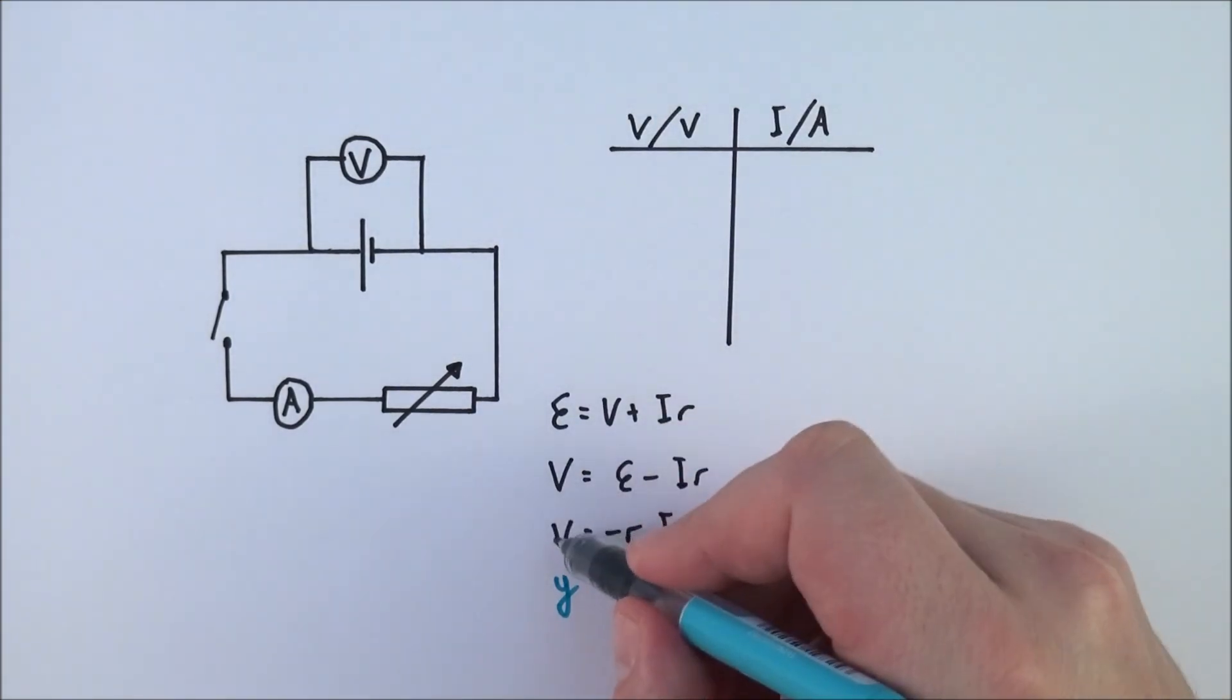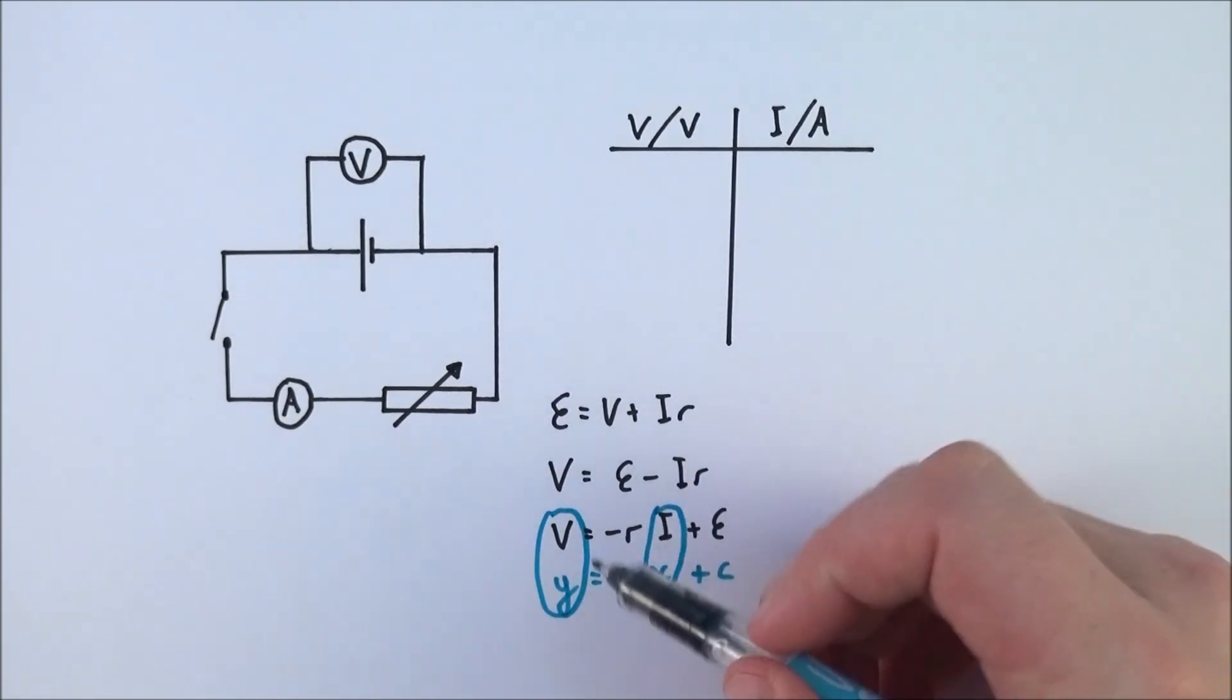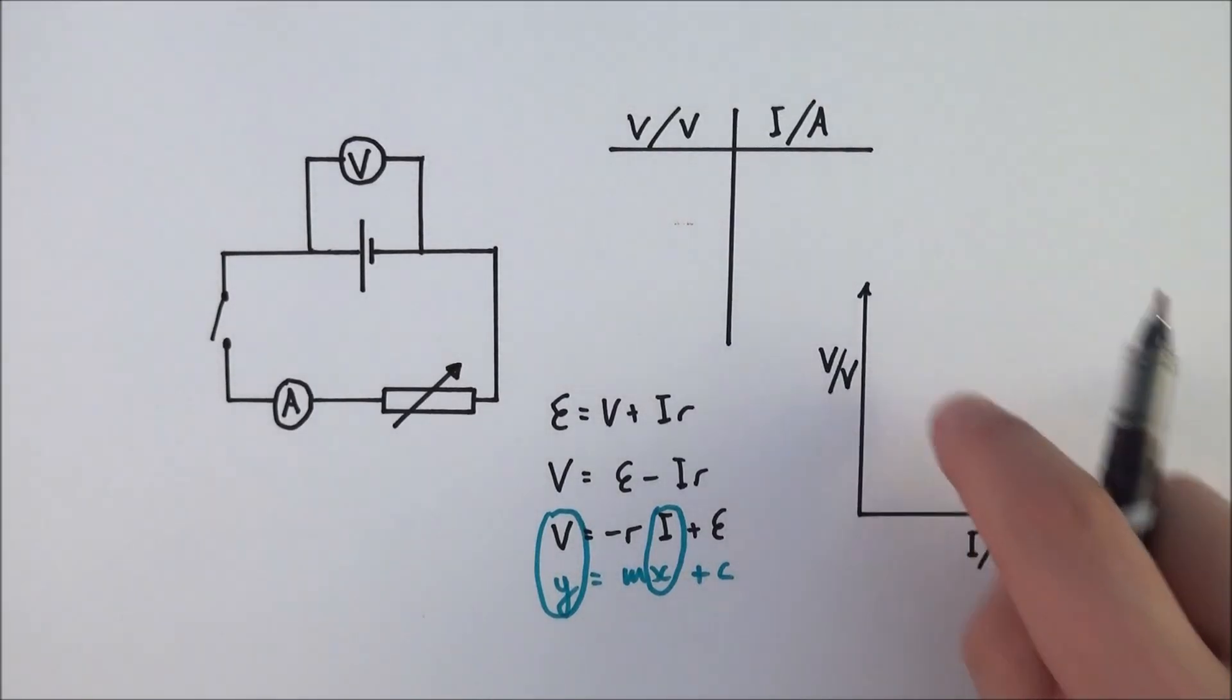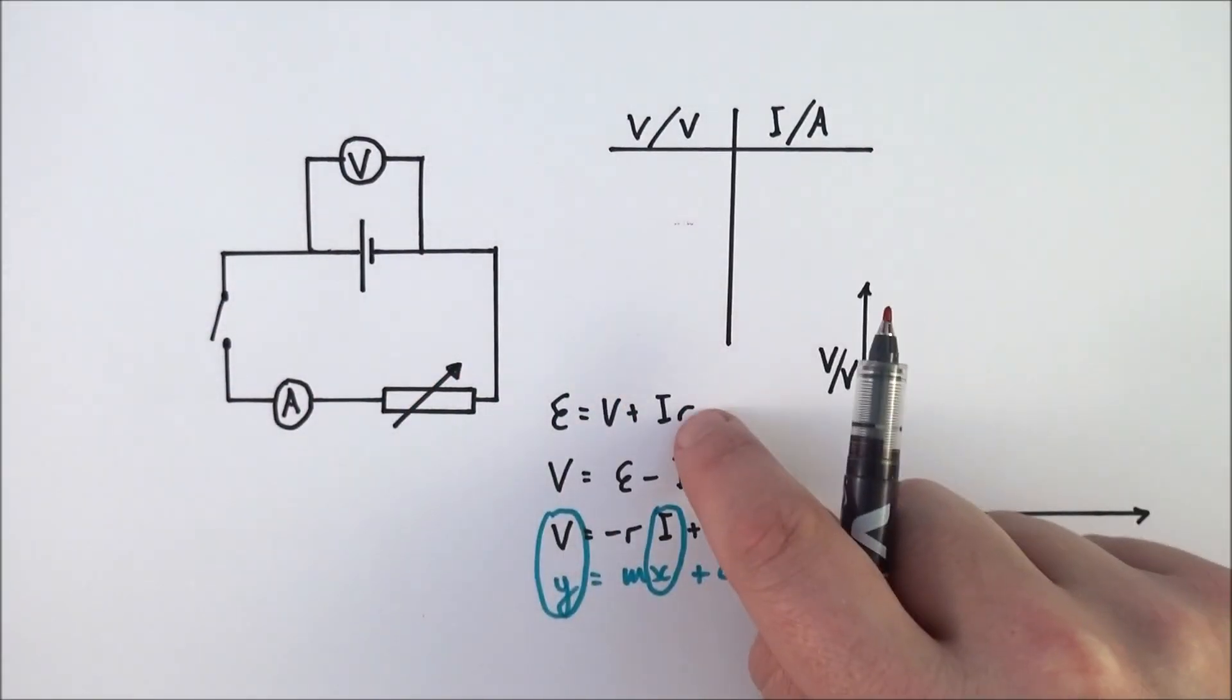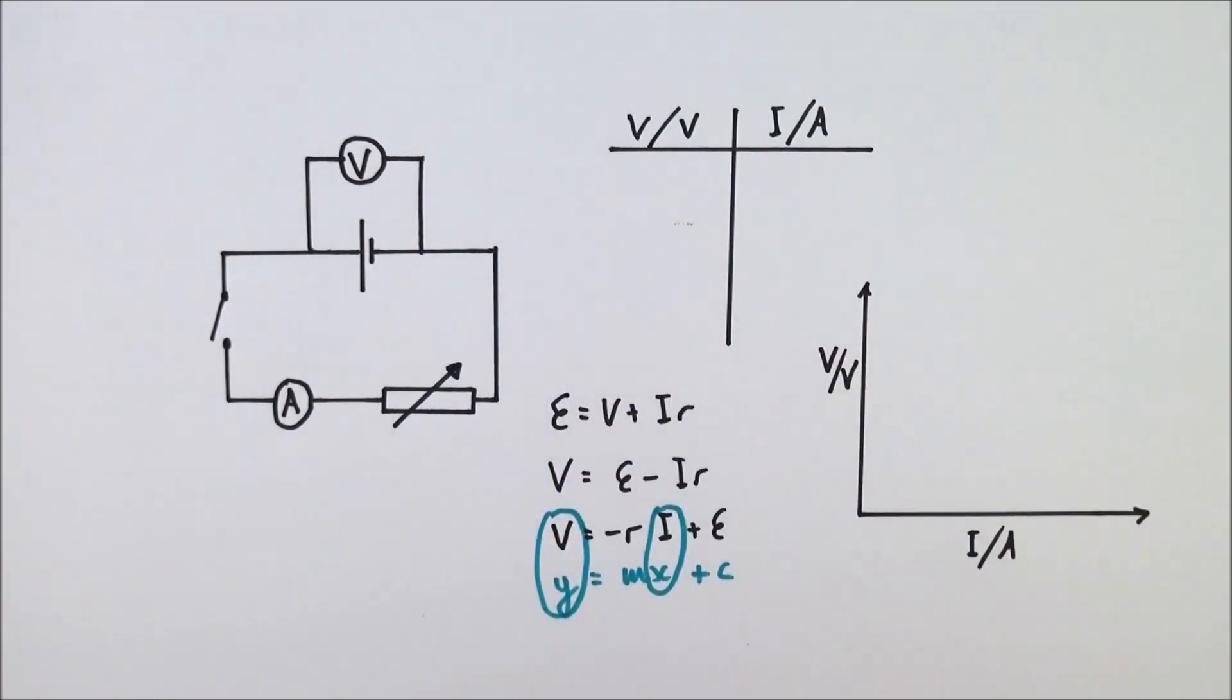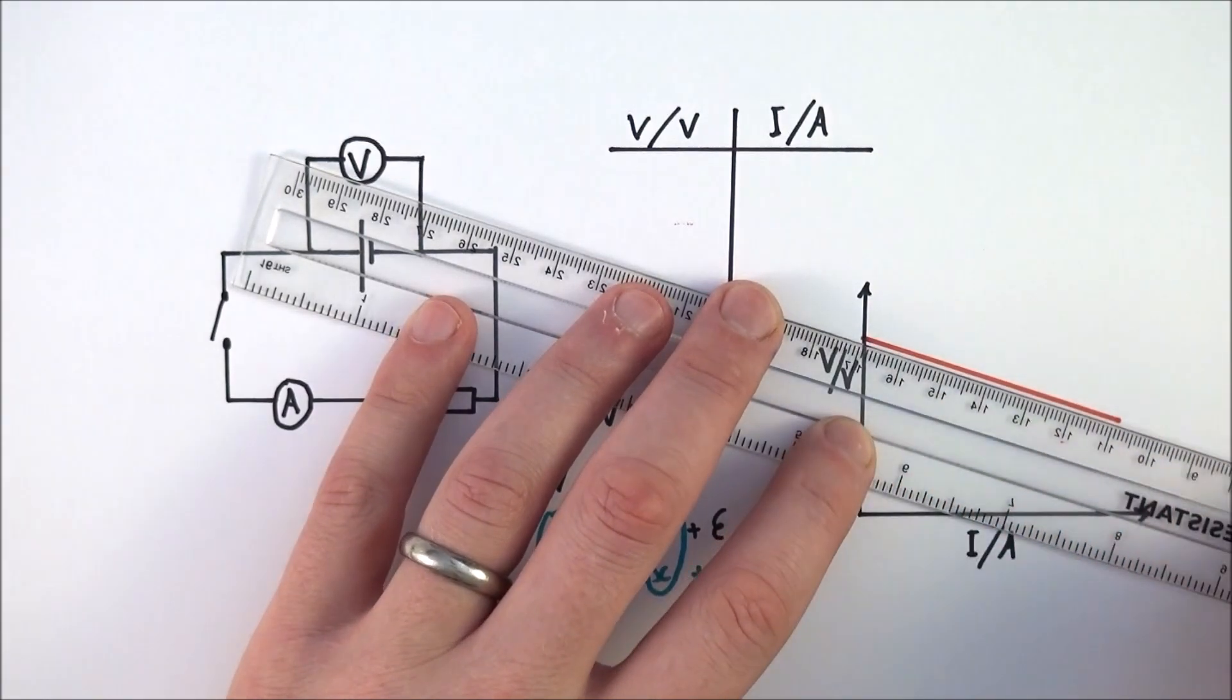What that means is if you plot the potential difference on the y-axis and the current on the x-axis, the gradient and the y-intercept then actually mean something. What you'll find is that when you have greater and greater current flowing in that circuit, the internal resistance is going to have a bigger effect and effectively cause what we call more lost volts, and that means we get a graph that looks a bit like this.